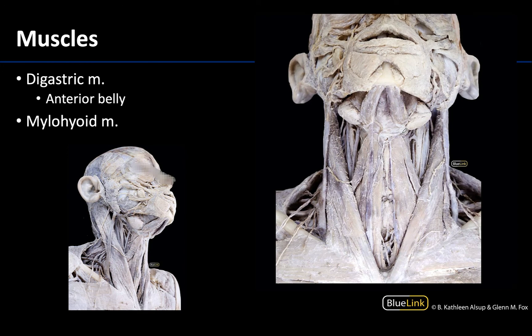Looking at an anterior view here and a more lateral view here, let's focus on identifying the mylohyoid muscle. Before doing that, it is hard to avoid the anterior belly of the digastric — so there's the anterior belly here. Deep, or really superior to the anterior belly, is the mylohyoid muscle. You can see the mylohyoid muscle here, extending into this region, and it is forming the bulk of the floor of the oral cavity. If you went superior to this muscle, you are getting into portions of the oral cavity.